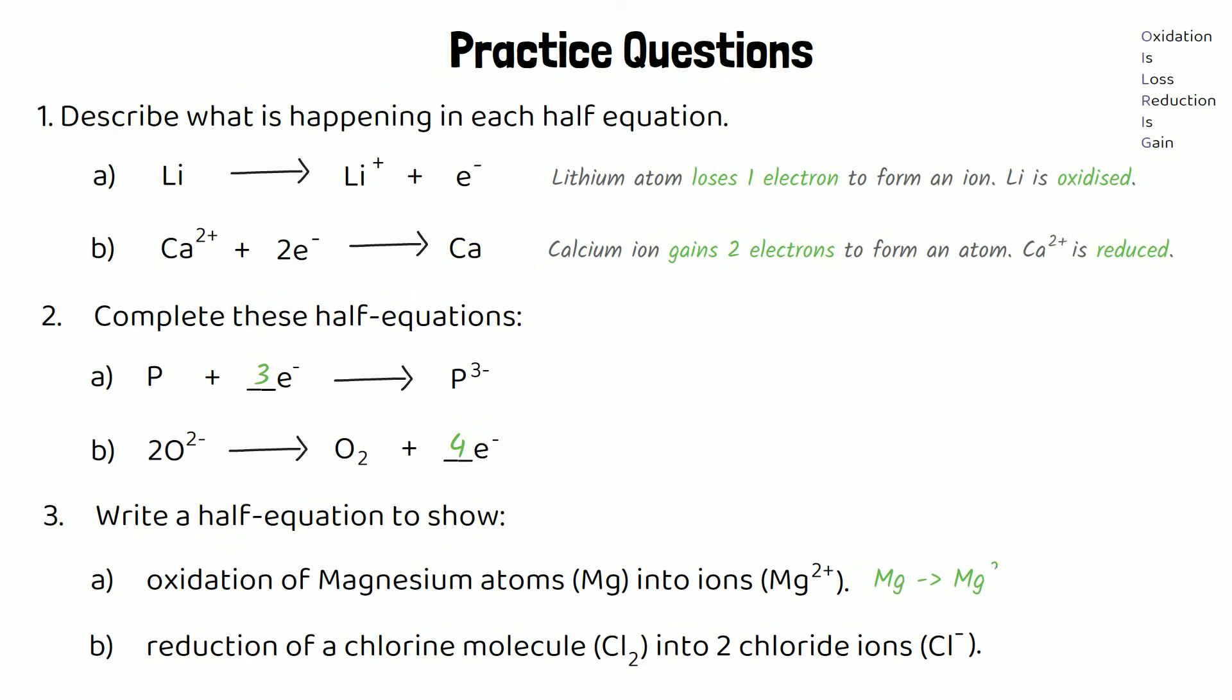For part 3A, our half equation would be Mg makes Mg2+ plus 2e-. And for part B, Cl2 plus 2e- makes 2Cl-. We need two electrons because we've got two atoms both becoming a 1 negative.